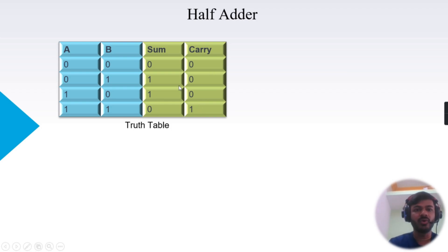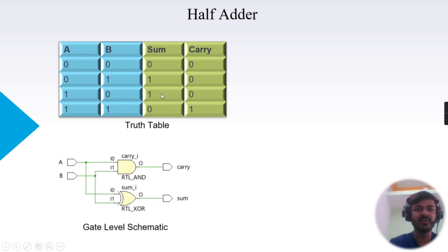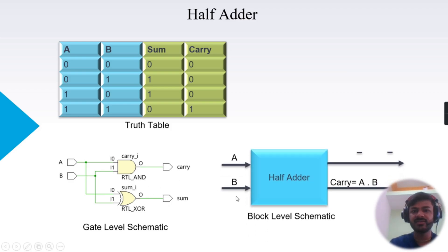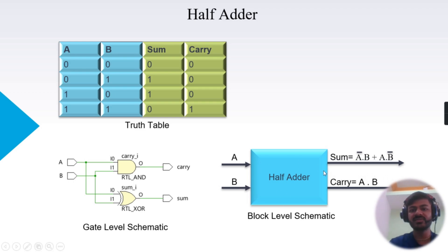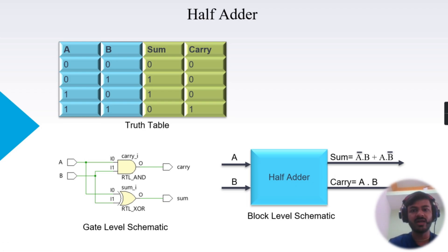You can see that to perform the sum operation, an XOR gate is used, and to perform the carry operation, an AND gate is used. You can see the gate-level schematic on screen. This is the gate-level schematic and this is the block-level schematic. We are going to use this block-level schematic to implement all the logic gates.